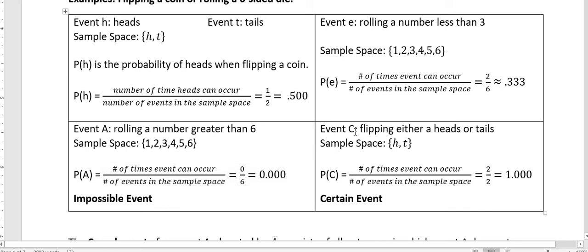And the other one, event C, flipping either a heads or a tails. And my sample space is H and T. So the number of times this can occur, well, I can either flip a heads or a tails. So those are my two options out of two options. And so that's a hundred percent.